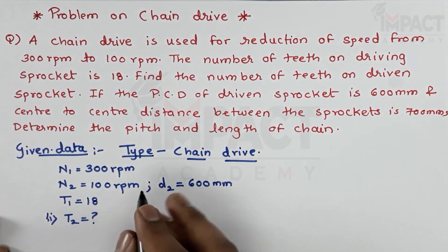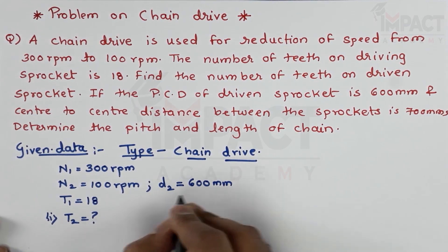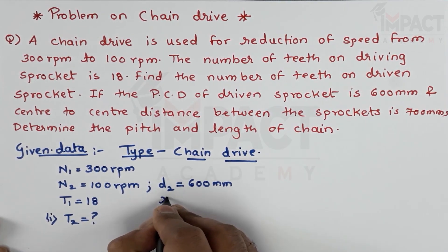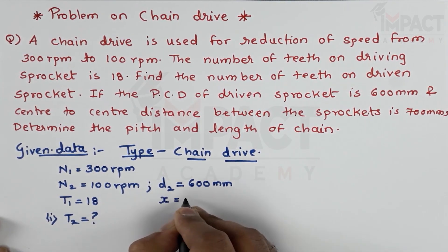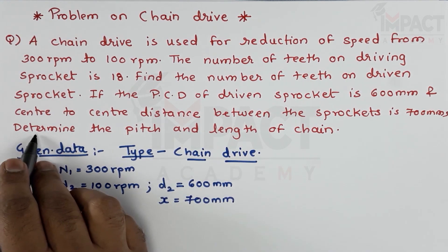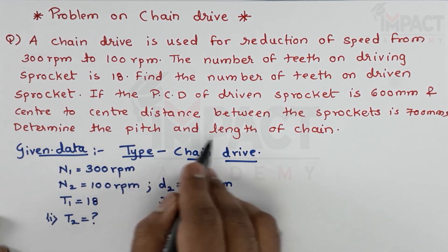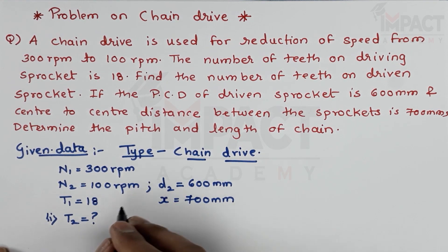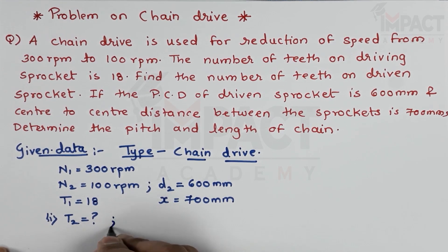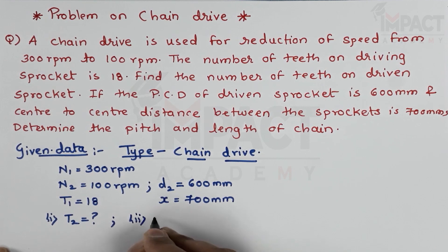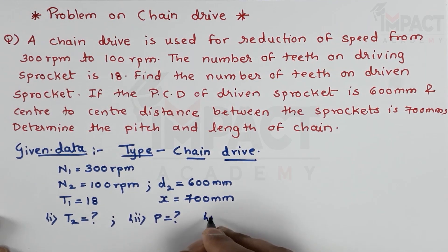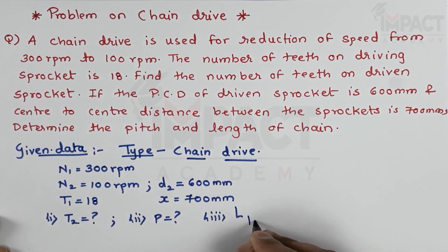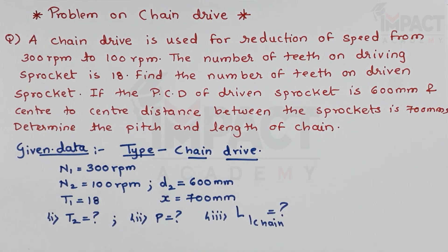The center to center distance between the sprockets is 700 mm, denoted as x. We have to determine the pitch and length of the chain. So after finding t2, the number of teeth on the driven sprocket, we need to find the pitch of the chain and the length of the chain.